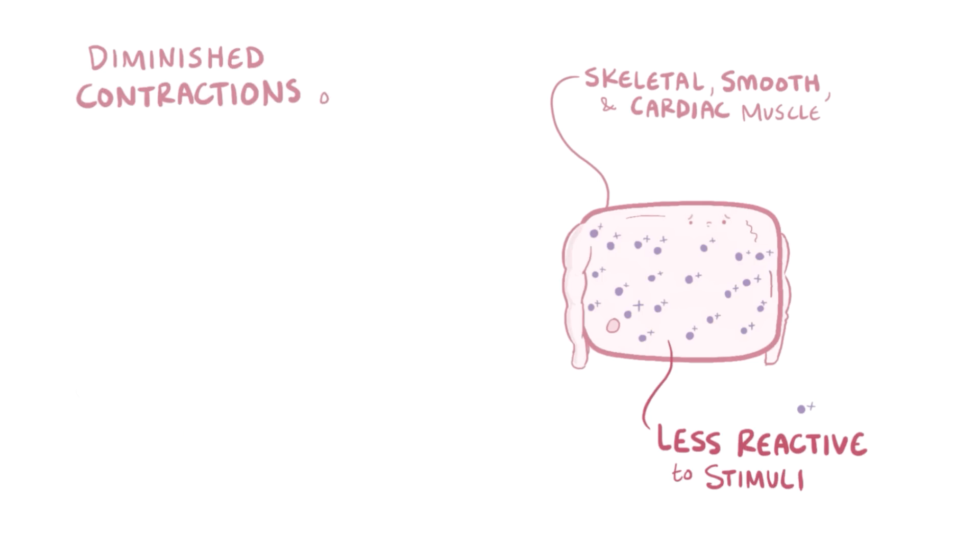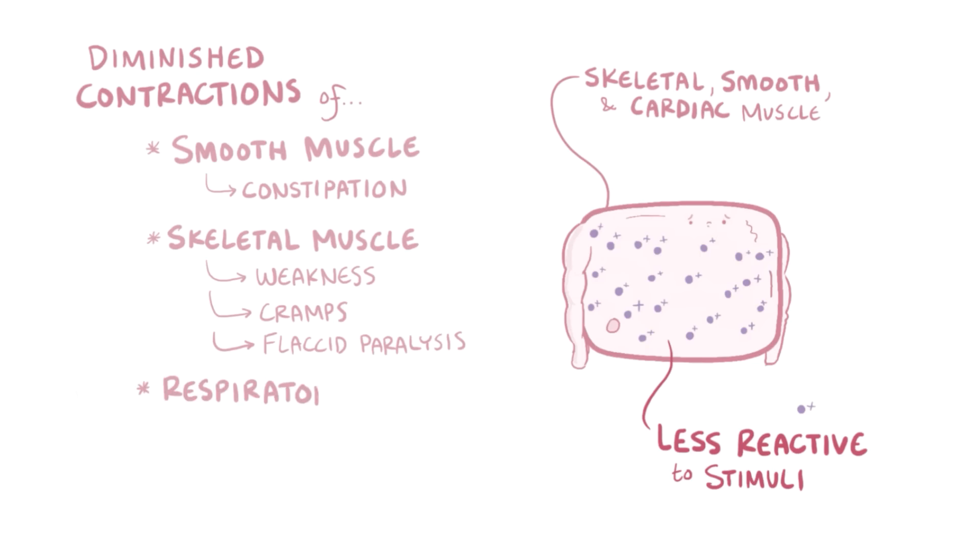Diminished contractions of smooth muscle can lead to constipation. Diminished skeletal muscle contractions can lead to muscle weakness, cramps, and flaccid paralysis, which tend to start in the lower extremities and ascend upward. Respiratory muscles can also be affected, which leads to respiratory depression. Finally, hypokalemia can affect cardiac muscle contractions, which can lead to cardiac arrhythmias, as well as cardiac arrest.